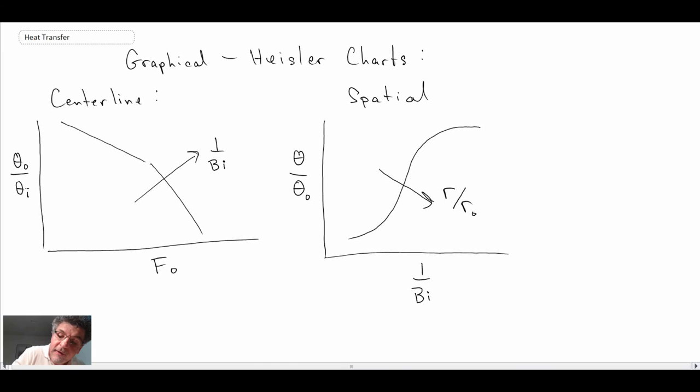And then finally heat loss. There will be curves for heat loss. And these are Q over Q naught. Again, plotted as a function of Fourier Biot R squared. And these curves are plotted for different Biot numbers.